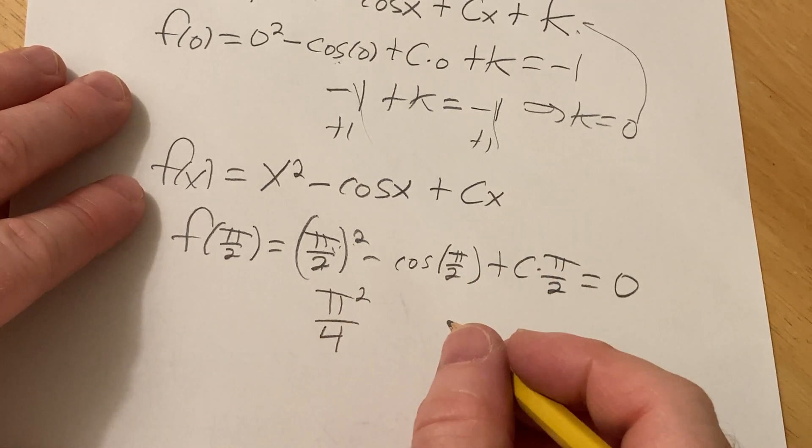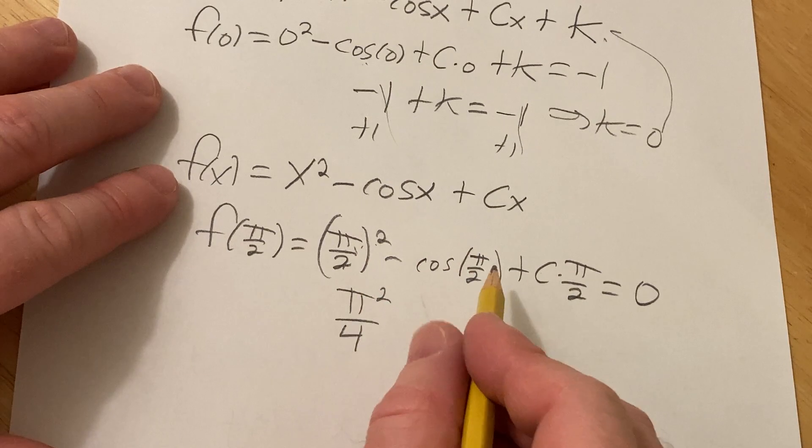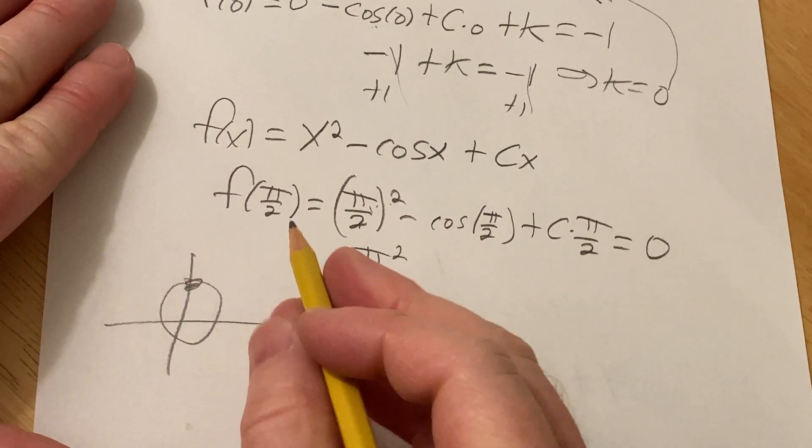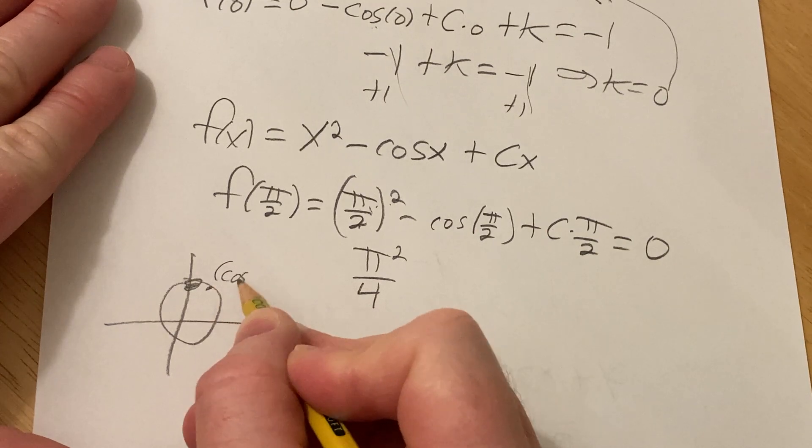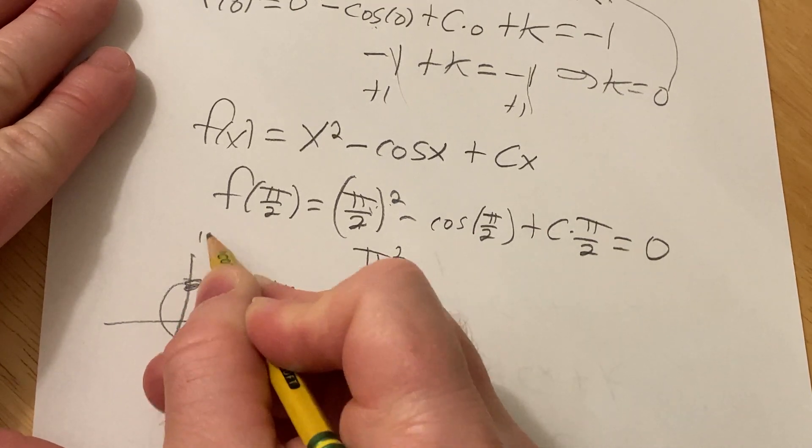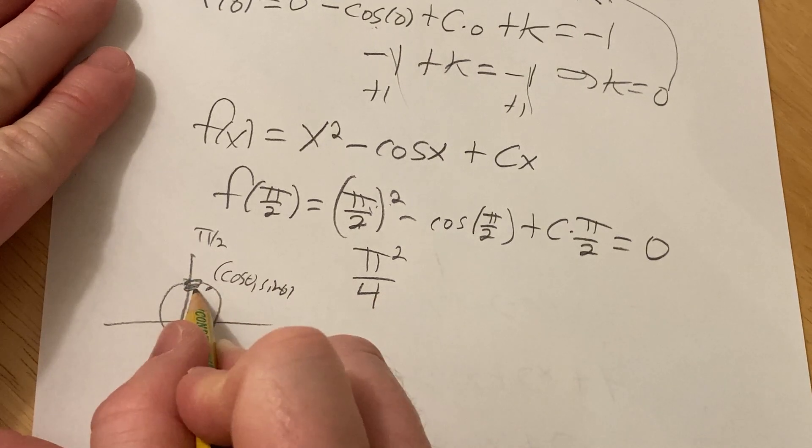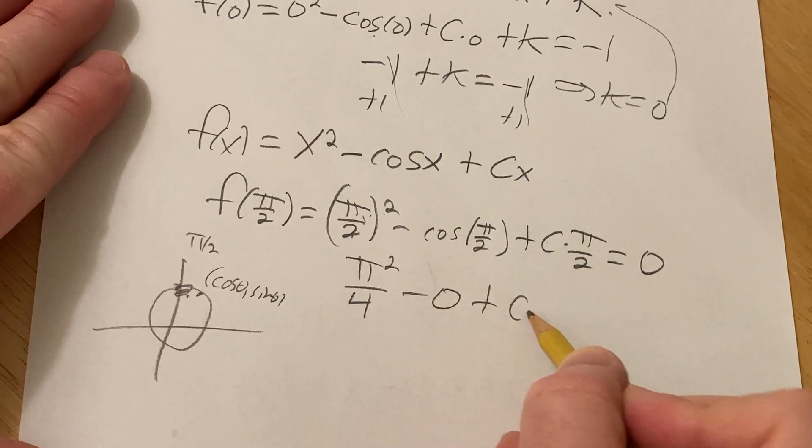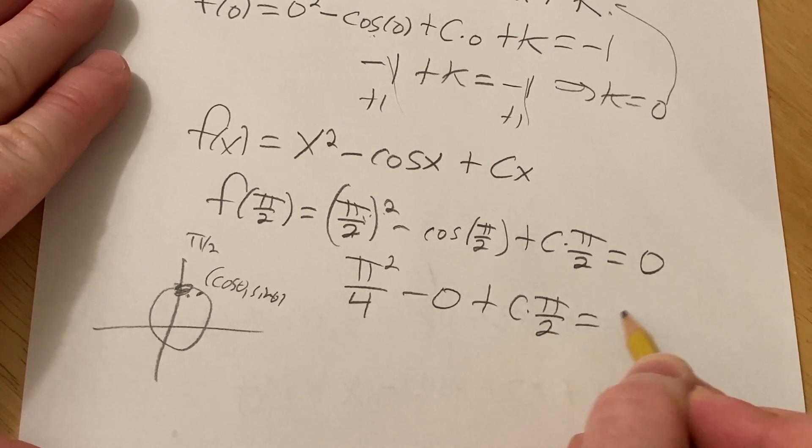Cosine of pi over 2 is going to be 0, right? Because that's the x-coordinate on the unit circle. On the unit circle, every ordered pair is of the form cosine theta, sine theta. And so, at pi over 2, the x-coordinate is 0. So, this is going to be 0. Plus c times pi over 2. And that's equal to 0.